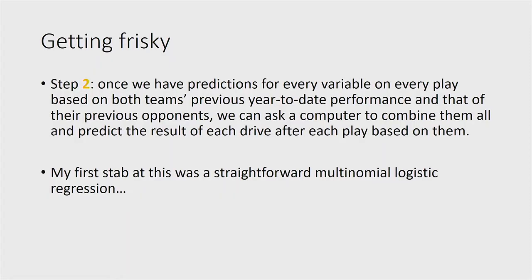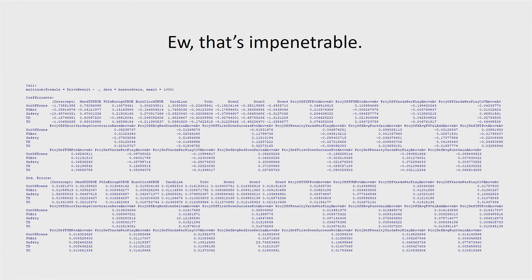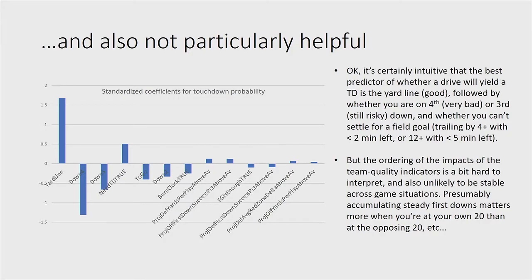Once we have those predictions, we can take every variable on every play, use those predictions, and put them in a big soup to ask a computer what's going to be the outcome of this drive based on all these play-level predictions. I tried it with a simple multinomial logistic regression, and it was very ugly. Looking at which variables wind up predicting drive outcomes via standardized coefficients, the game situation so dominates that the impact of the actual team-quality variables is a little hard to assess. Moreover, this assumes a steady impact for each variable in each situation, which clearly isn't the case.